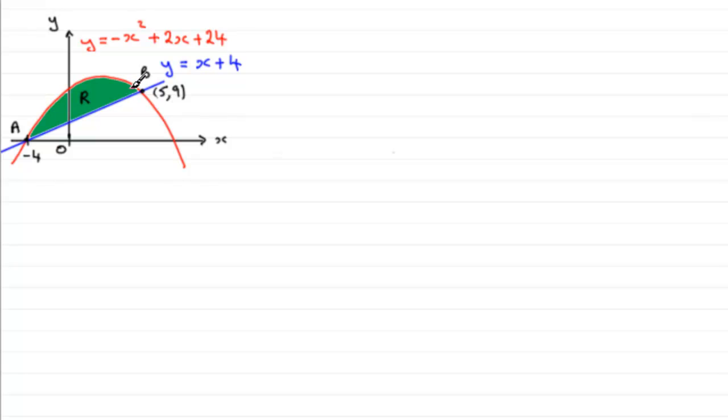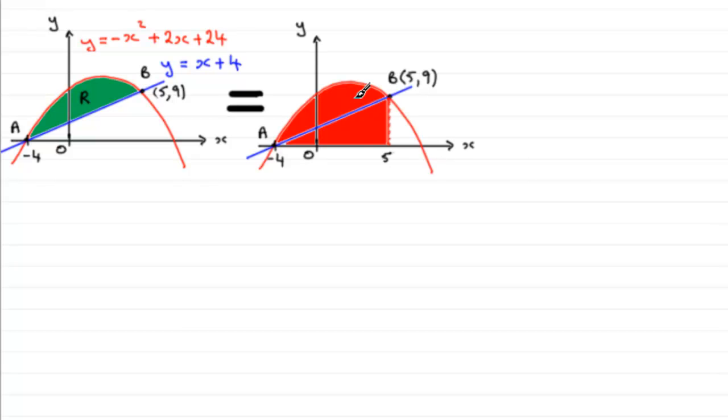You can see that I've updated the points A and B that we found in the earlier part. They had an x-coordinate minus 4, B had the coordinates (5,9). We're going to say that that area shaded in green is equivalent to working out this area minus the area of the triangle.